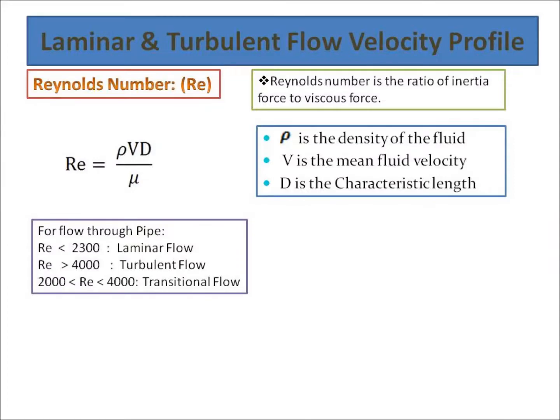The dimensionless number that can be used for differentiating the laminar and turbulent flow is called Reynolds number. Reynolds number is the ratio of inertia force to the viscous force. Mathematically it can be written as ρVD divided by the viscosity μ, where ρ is the density of fluid, V is the mean fluid velocity, and D is the characteristic length.